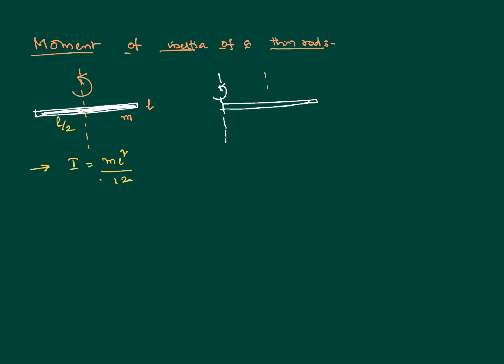As just now mentioned, the moment of inertia about an axis passing through the center, which could be also treated like the center of gravity, is mL square by 12. And the distance between these two axes is equal to L by 2.